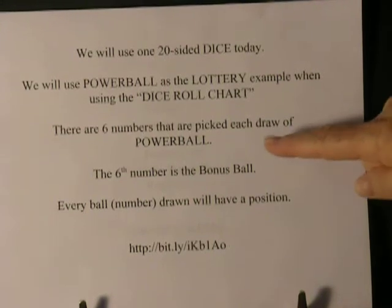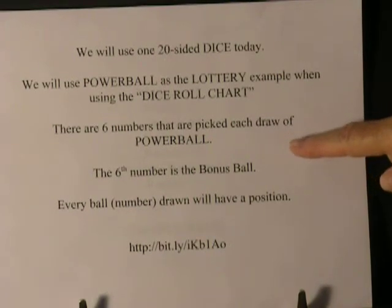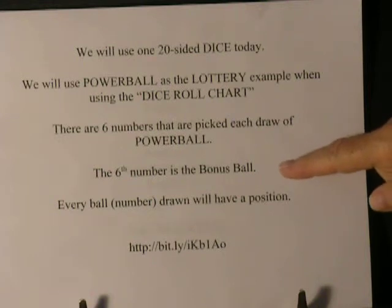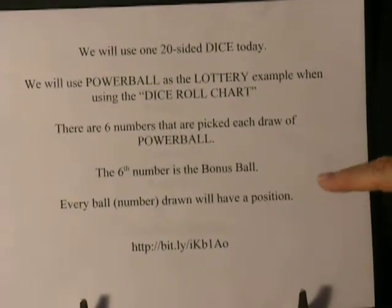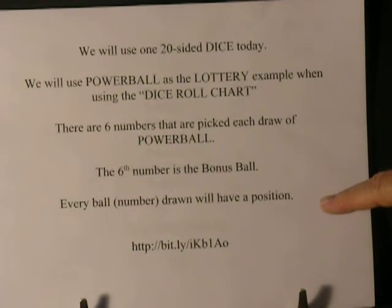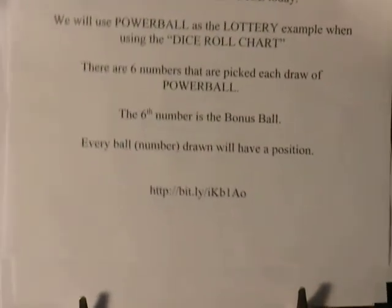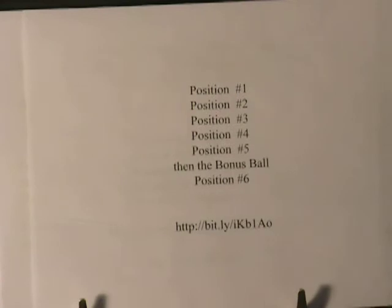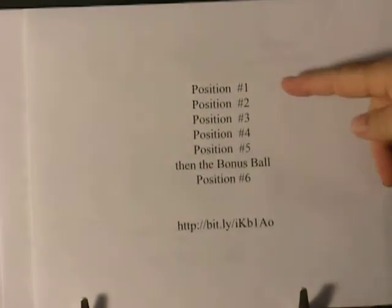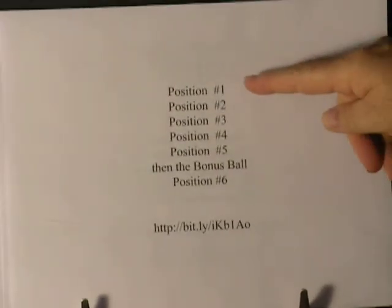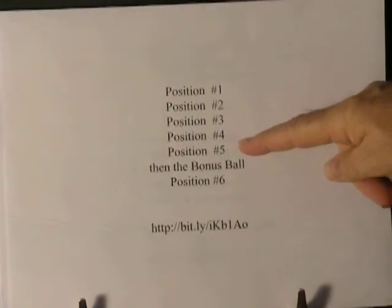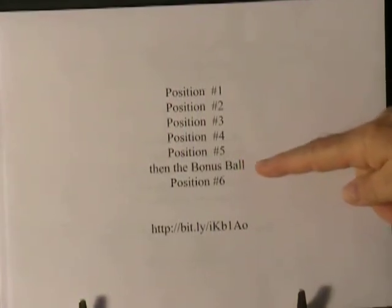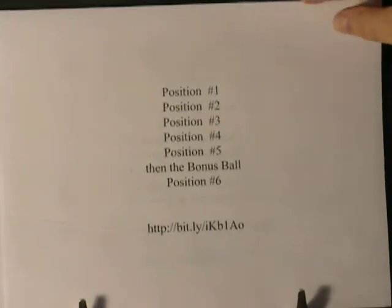There are six numbers that are picked each draw of Powerball — the sixth number is the bonus ball. Every ball or number drawn will have a position: position one, two, position three, position four, position five, and then the Powerball position six.